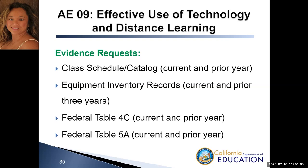For AEO-9, we are looking for evidence that technology is being used in the classroom. Note that class schedule/catalog under AEO-7 and equipment inventory under AEO-2 are shared evidence under this item. Federal Table 4C, current and prior year, is a TE report named Measurable Skill Gains in Distance Learning Programs — this applies only to agencies with distance learning programs; if your agency does not have one, indicate that in a comment in CMT. Federal Table 5A, current and prior year, is a TE report named Primary Indicators of Performance in Distance Learning Programs — also applies only to agencies with distance learning programs.